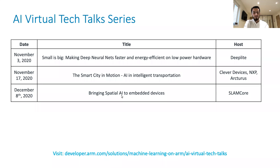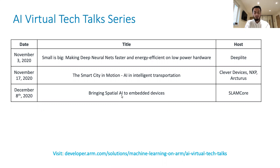Today we're really excited to be joined by one of our amazing AI ecosystem partners, Deep Light. They're going to give you a fascinating insight into how to make deep neural networks faster and more energy efficient when running on particularly low-power hardware. At the end of this talk, there'll be an opportunity for an open mic Q&A session, as well as questions in the Zoom Q&A box. Without further ado, I'm going to let Davis and Charles from Deep Light introduce themselves.